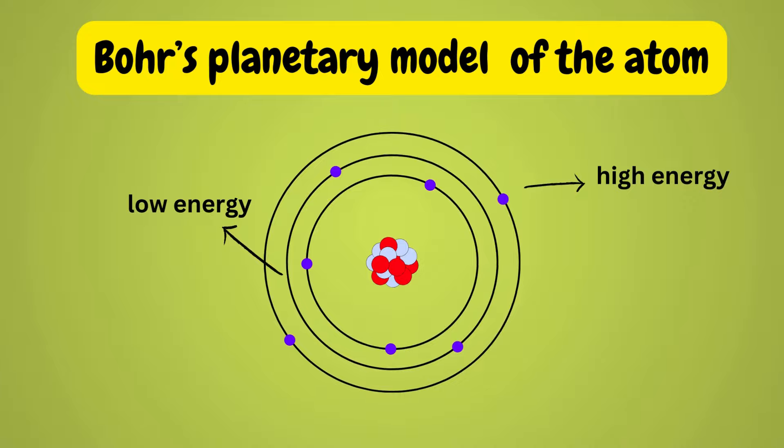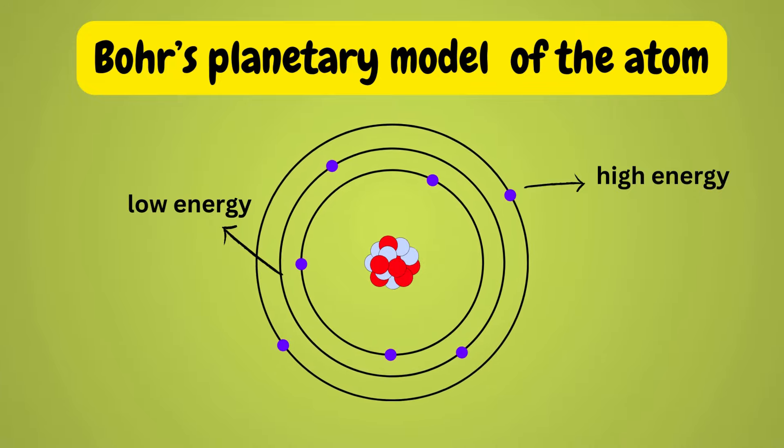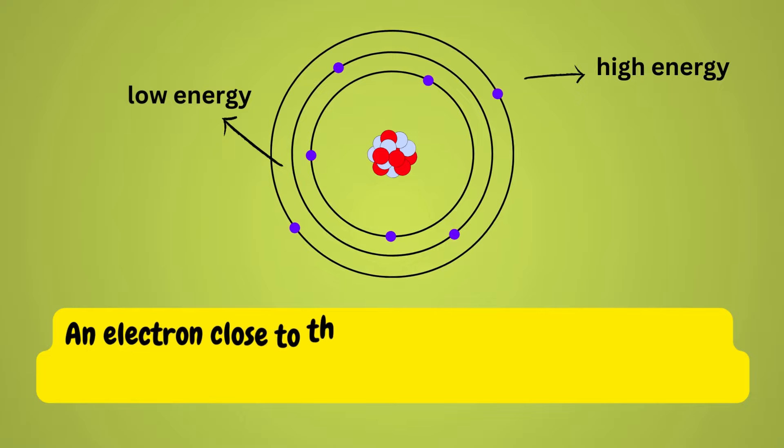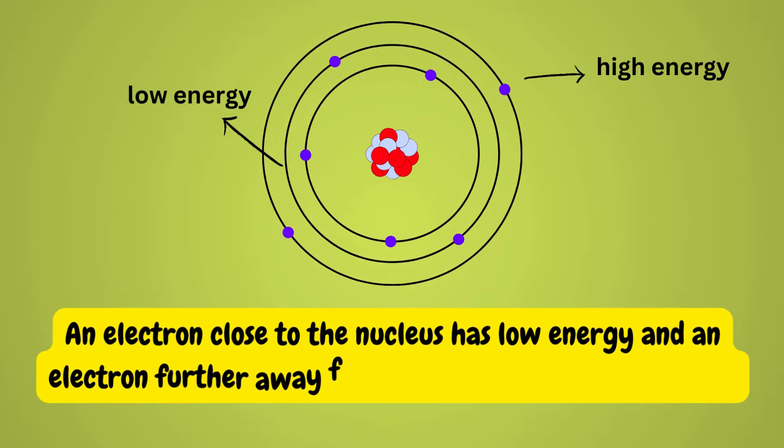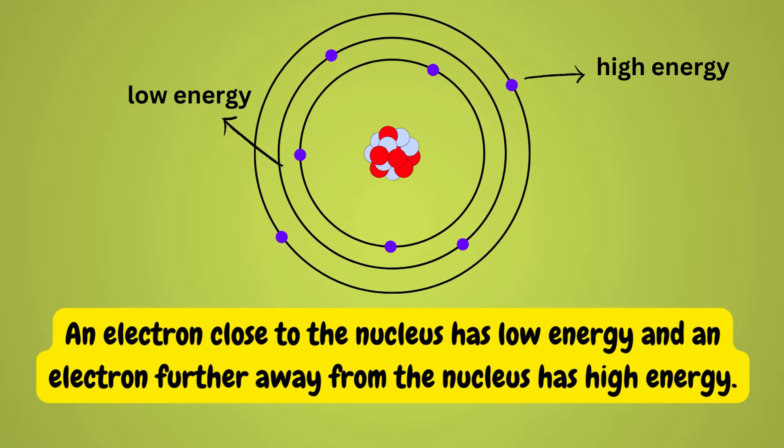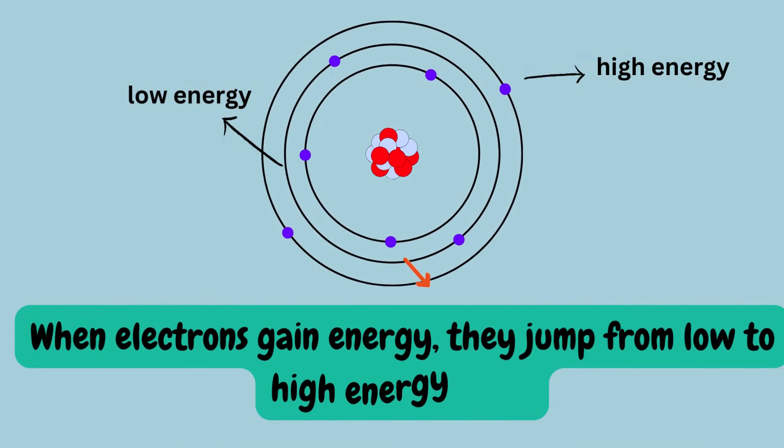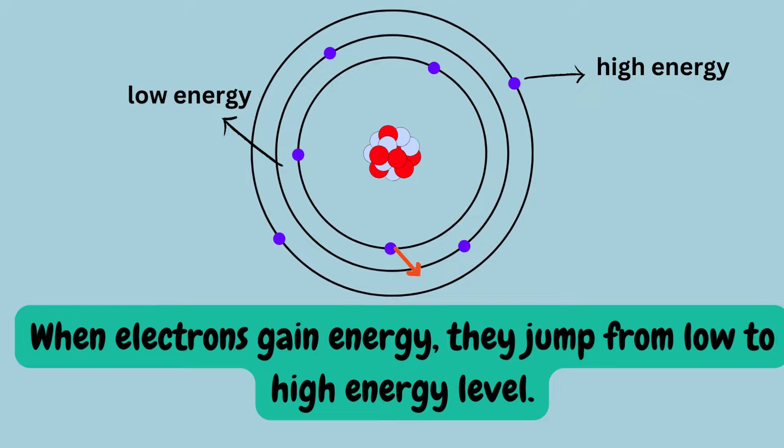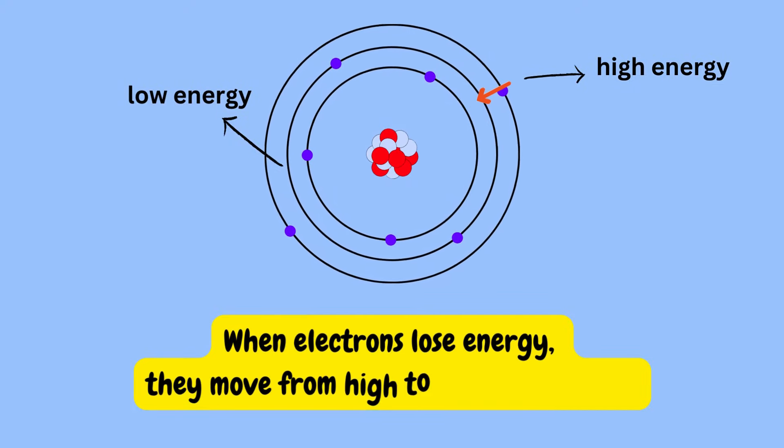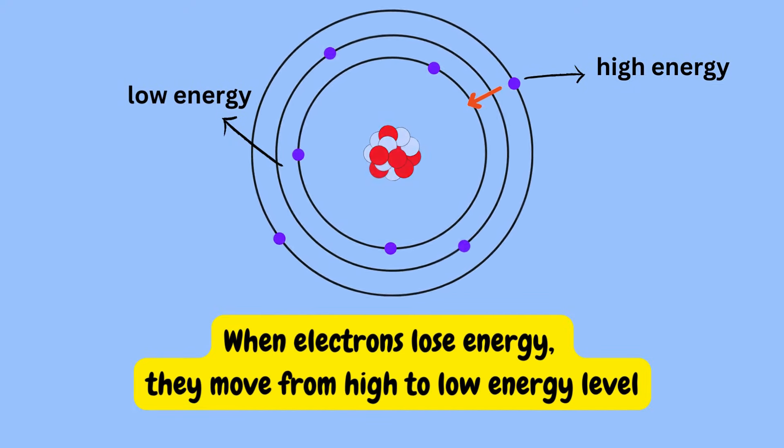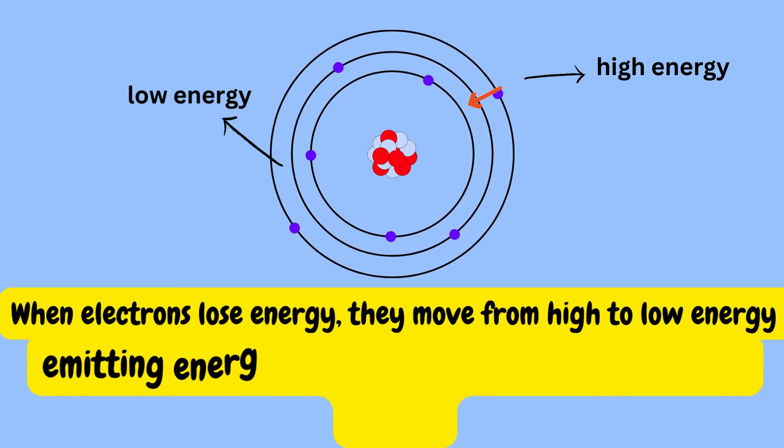An electron close to the nucleus has low energy, and an electron further away from the nucleus has high energy. When electrons gain energy, they jump from low to high energy level. When electrons lose energy, they transition from high to low energy level, emitting energy in the form of light of different colors.